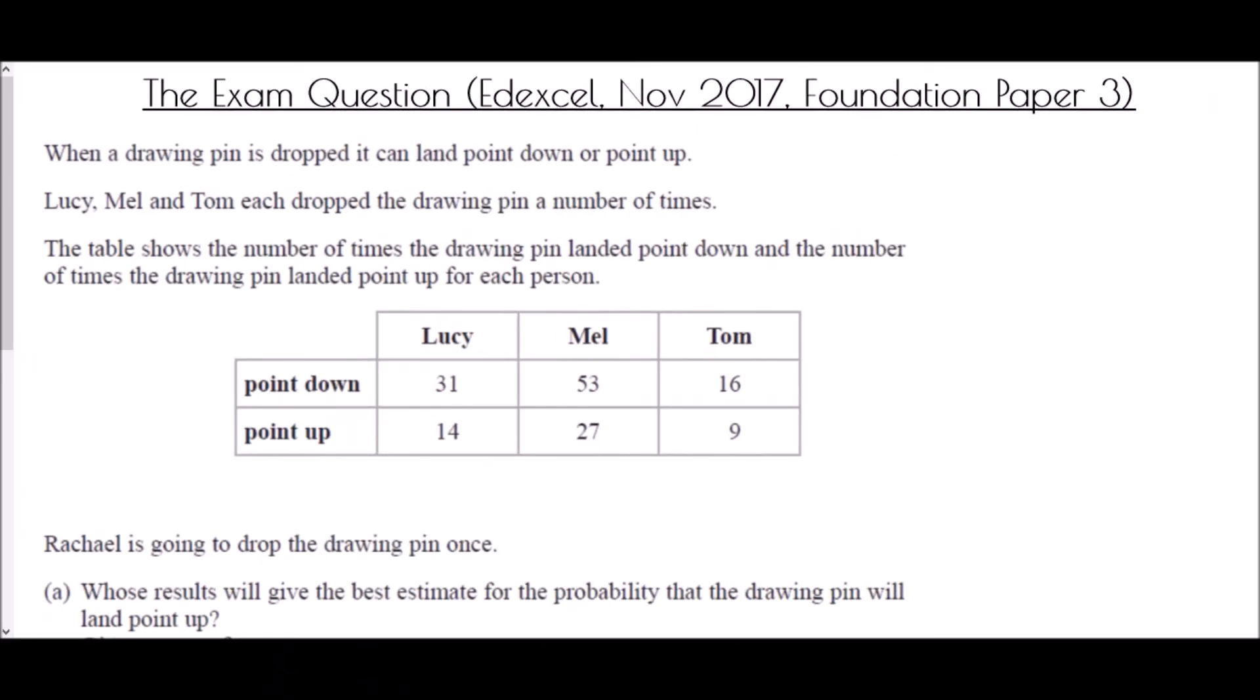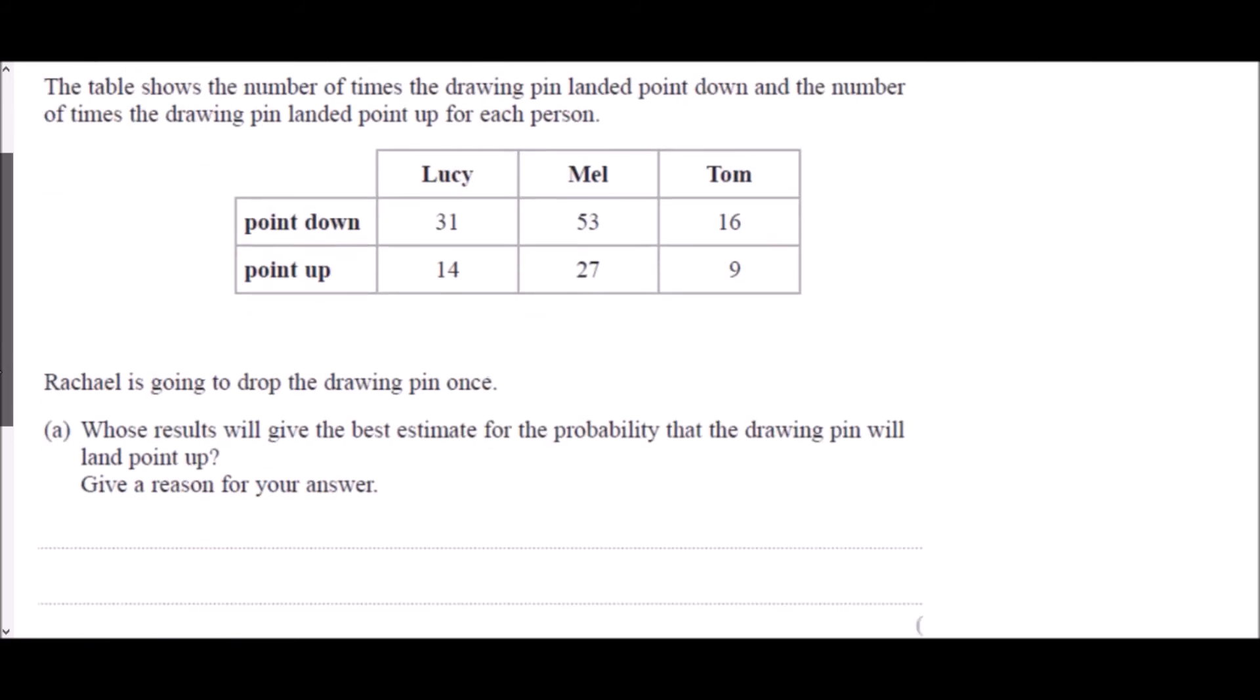And so we end with the exam question. This came from the Edexcel paper in November 2017, and it was on Foundation Paper 3. When a drawing pin is dropped, it can land point down or point up. Lucy, Mel and Tom each dropped the drawing pin a number of times. The table shows the number of times the drawing pin landed point down and the number of times the drawing pin landed point up for each person. Rachel is going to drop the drawing pin once. Whose results will give the best estimate for the probability that the drawing pin will land point up? Give a reason for your answer.